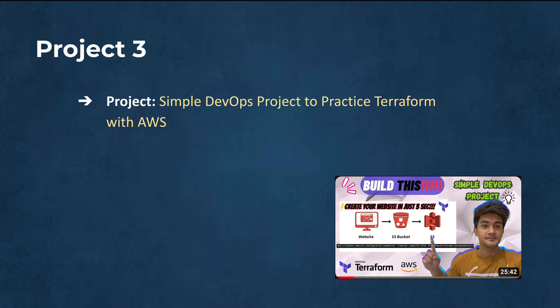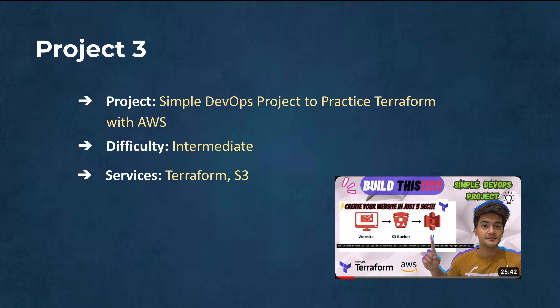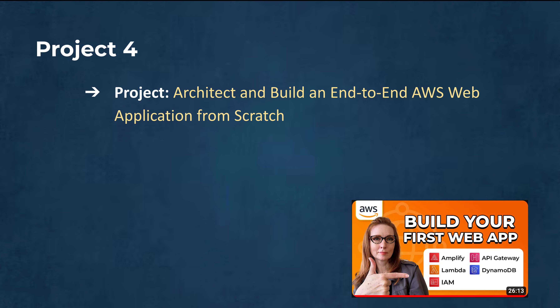Moving on to Project 3, this is a simple DevOps project to practice Terraform with AWS. It takes you a step further into infrastructure as code and DevOps practices. You will learn to use Terraform, a popular infrastructure-as-code tool, to provision AWS resources — defining infrastructure as code, managing dependencies, and automating resource provisioning. The level is intermediate and you'll need some understanding of AWS services and Terraform basics. Services used are Terraform and Amazon S3, and the video length is 25 minutes. It's from the Cloud Champ YouTube channel.